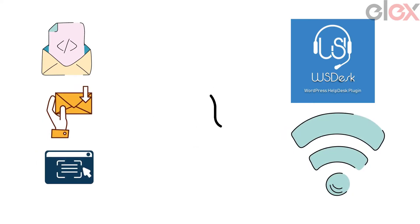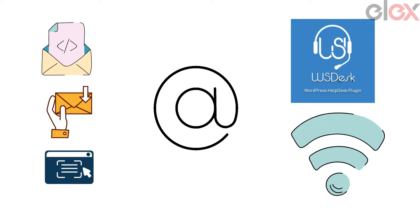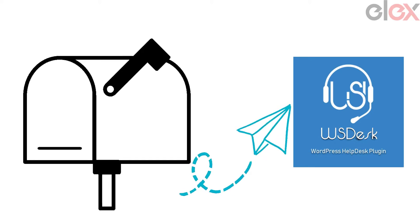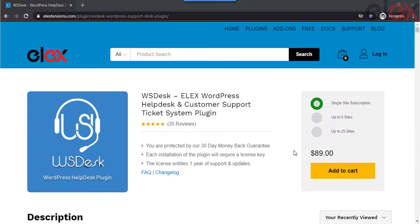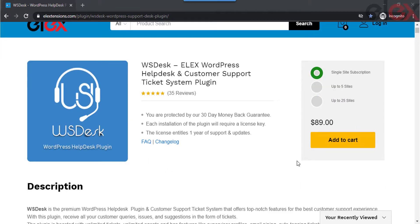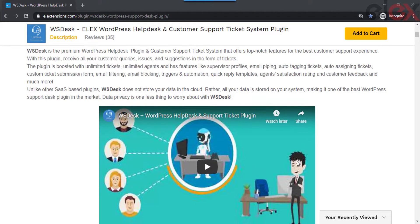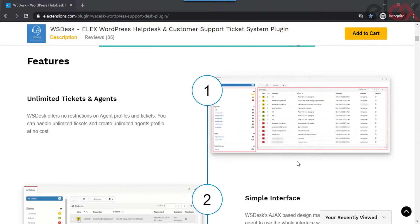Hence, with this plugin you can configure multiple email IDs that have the possibility to be entered by the customers. All the emails received to those configured addresses will be passed to the helpdesk system. Let us check how you can configure multiple IMAP accounts for the WordPress Helpdesk plugin WS Desk — Elix WordPress Helpdesk and Customer Support Ticket System plugin.